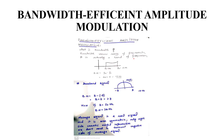For example, we have a signal where the lower frequency f_L is equal to 5 Hz and the high frequency is 20 Hz. If we want to find the bandwidth of this signal: bandwidth = f_H - f_L = 20 - 5 = 15 Hz. This is the range of frequencies — its bandwidth is 15 Hz.